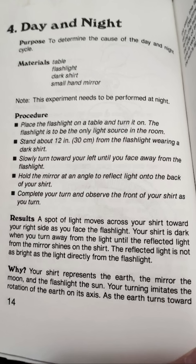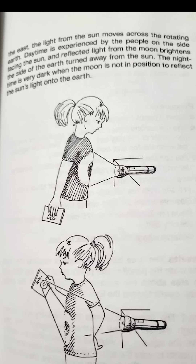Your turning imitates the rotation of the earth on its axis. As the earth turns toward the east, the light from the sun moves across the rotating earth. Daytime is experienced by the people on the side facing the sun. The reflected light from the moon brightens the side of the earth turned away from the sun. The nighttime is very dark when the moon is not in position to reflect the sun's light onto the earth.